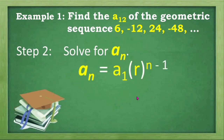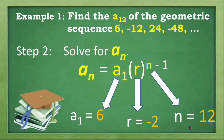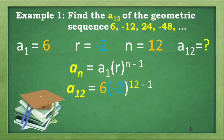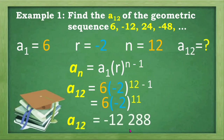So let's solve for A sub n. That is A sub n equals A sub 1 multiplied by R raised to n minus 1. Our value for A sub 1 is 6, R is negative 2, and n is 12. Substituting: A sub 12 equals 6 times negative 2 raised to 12 minus 1, which is 11. Raising negative 2 to the 11th power and multiplying by 6, the result is equal to negative 12,288.